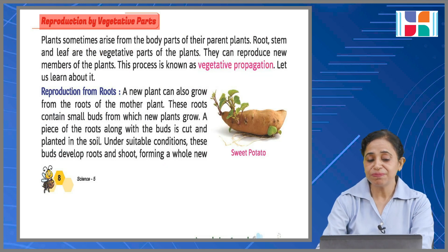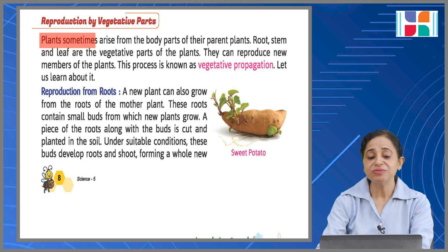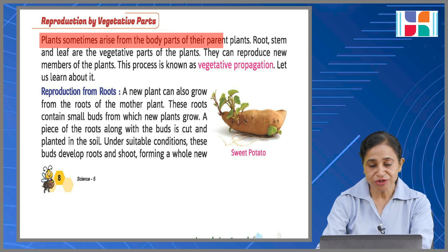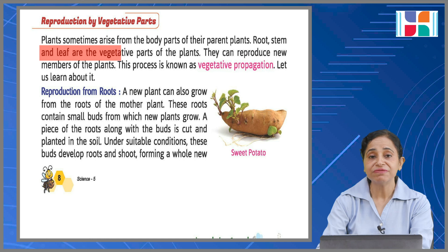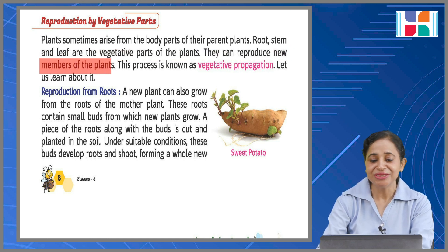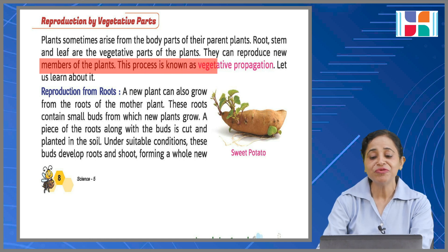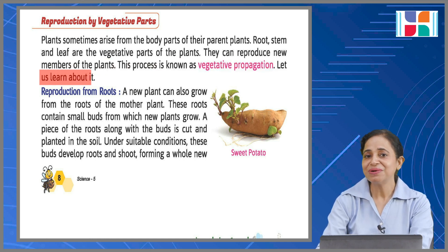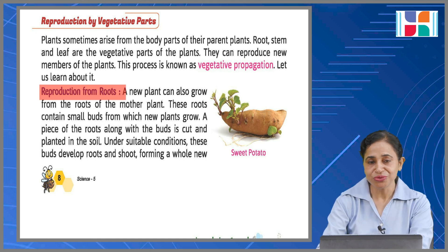Reproduction by vegetative parts: plants sometimes arise from the body parts of their parent plants. Root, stem, and leaf are the vegetative parts of a plant. They can reproduce new members of the plant, and this process is known as vegetative propagation. Let us learn about reproduction from roots.